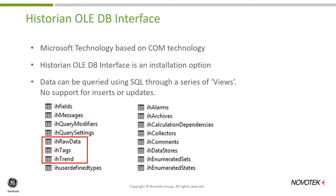There are a wide number of tables available, but for most people we're interested in three key tables. First, IH Raw Data, where all raw data from tags is stored. Then IH Tags, which stores all tag information including name, description, data source, and update frequency. And finally IH Trend, which is useful when you want to pull back multiple columns of data at the same time.